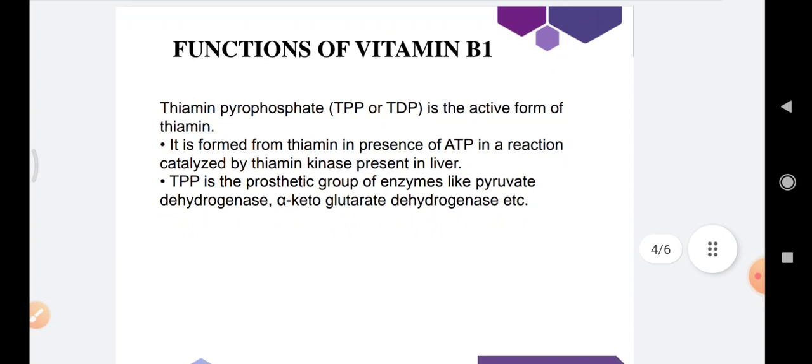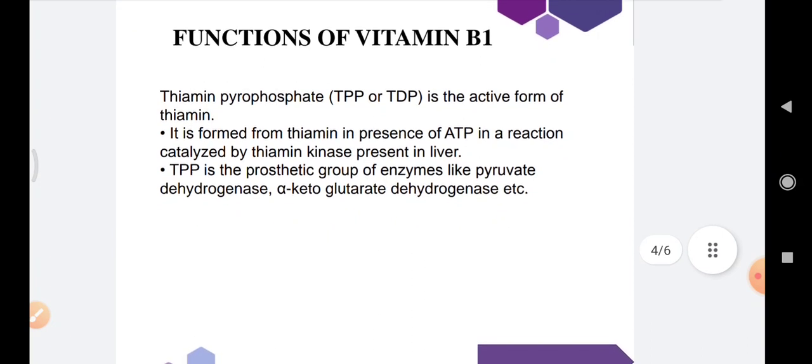Coming to the function of Vitamin B1, thiamine pyrophosphate (TPP) is the active form of thiamine. It is formed from thiamine in the presence of ATP in a reaction catalyzed by thiamine kinase present in liver.